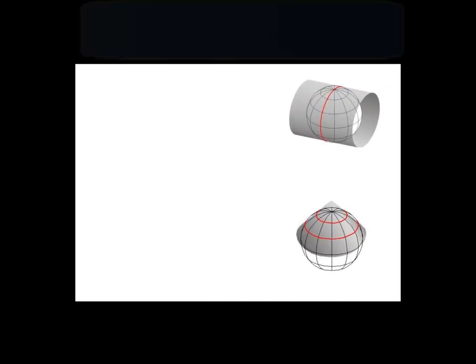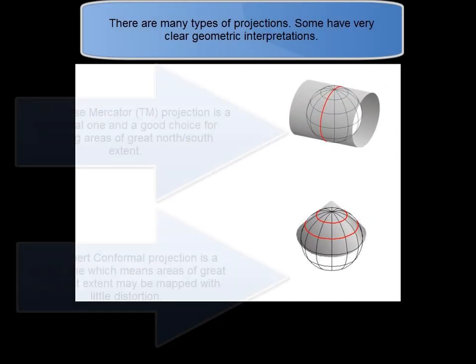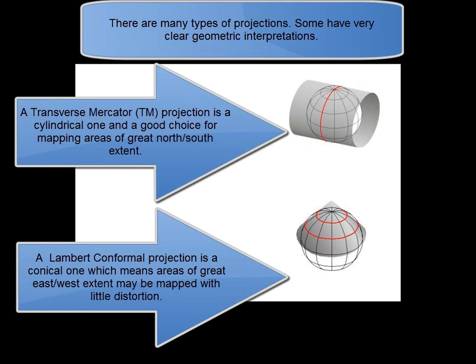There are many types of projections. A transverse Mercator projection is a cylindrical one and a good choice for mapping areas of great north-south extent. A Lambert conformal projection is a conical one, which means areas of great east-west extent may be mapped with little distortion.